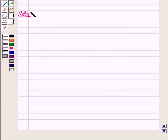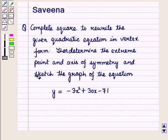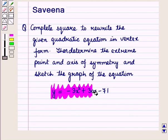Now let us start with the solution of the given question. We are given the equation y is equal to minus 3x squared plus 30x minus 71.